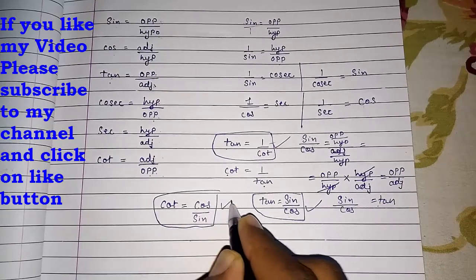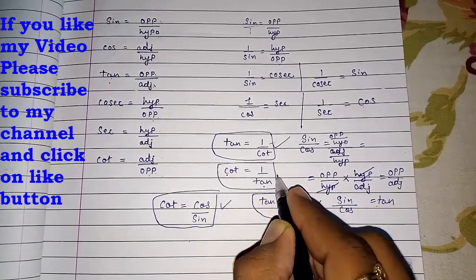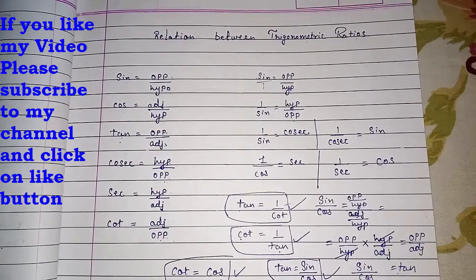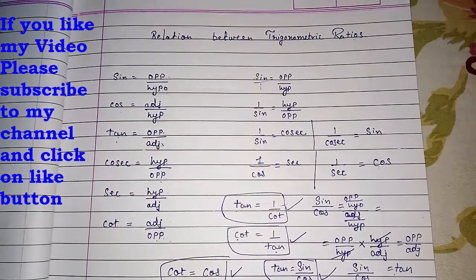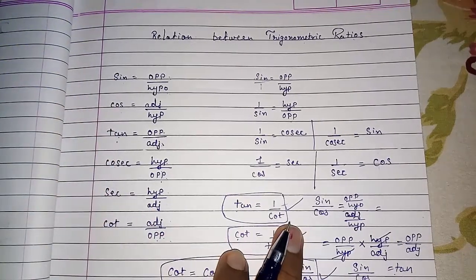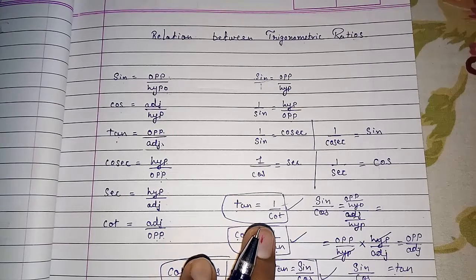So these are the internal relationship between all the angles. These are very much important. If you study this you will get good marks. These are the base. These are the six ratios, the relationship between them, trigonometric identities.